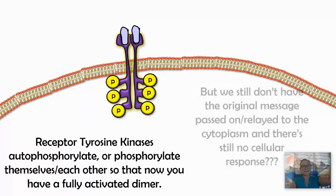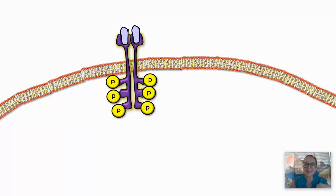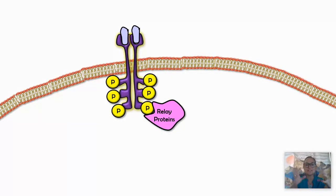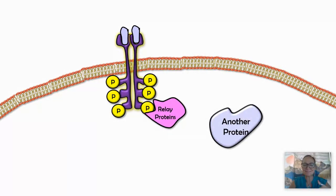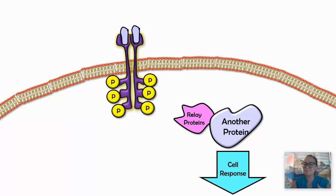The original molecule — maybe insulin or a growth factor — attached, but we still haven't relayed the message on. On the inside, we rely on relay proteins — a series of proteins within the cell that pass the message on to bring about a cell response. We'll talk about more specific examples in the next video on signal transduction pathway examples.